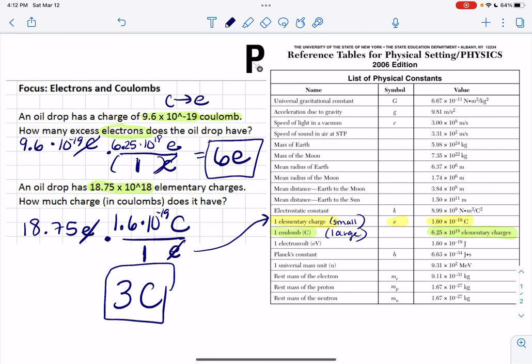So that's basically how you do it. And you could use either ratio. You just need to set it up correctly and find a way that works best for you. But the answers for these two is 6 elementary charges and 3 coulombs.